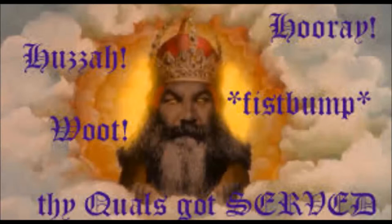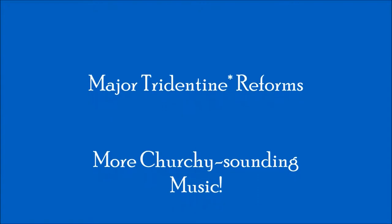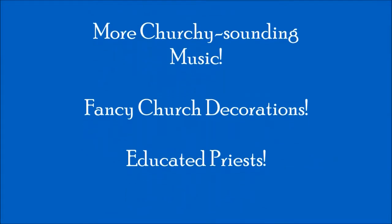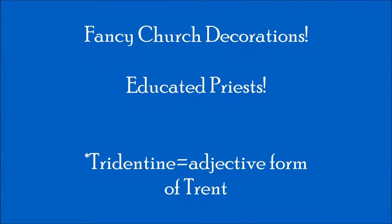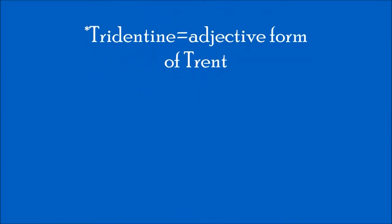There are a lot of websites that focus on the theological reforms of the Council of Trent, but not very many that talk about the social and worship reforms, so that's what I'm going to focus on here. In terms of making the worship experience more meaningful, the church decided to enforce a policy of having more churchy-sounding music, lots of fancy church decorations, and making sure all priests had a minimum education so they could teach actual Catholic doctrine, create a sermon, and understand Latin. The Council also did its best to eliminate pluralism — the practice of taking a bunch of different church jobs and paying somebody else half the salary to do them for you, while you collected the other half for doing nothing.